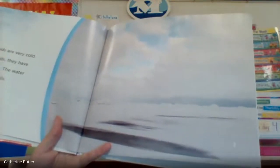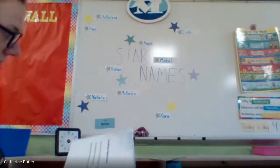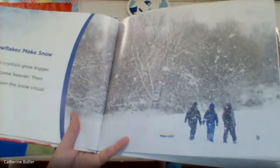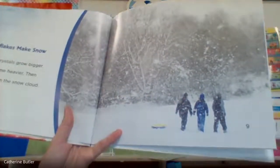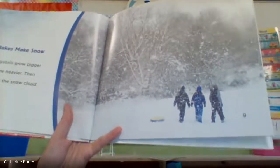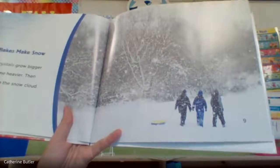Snow clouds are very cold. Like all clouds, they have water in them. The water forms ice crystals. The ice crystals grow bigger and become heavier, then they fall from the snow cloud.